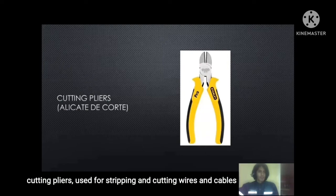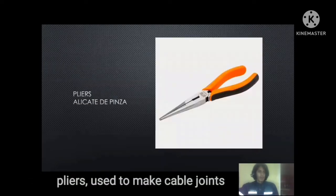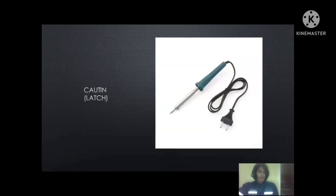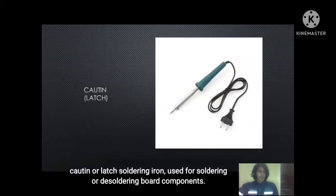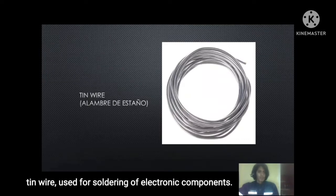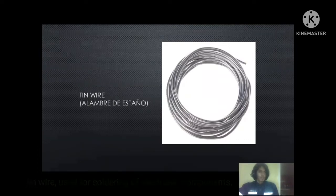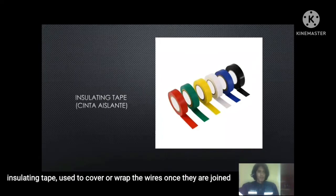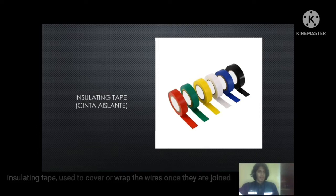Cutting pliers: used for stripping and cutting wires. Wire stripper: used to make cable joints. Soldering iron: used for soldering board components. Insulating tape: used to cover or wrap the wires and joiners.